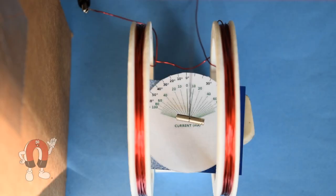Today's project, how to build an ammeter using neodymium magnets and some wire. Can we measure the amount of electrical current running through a wire?